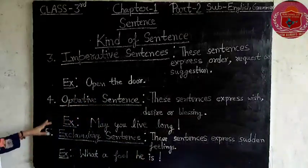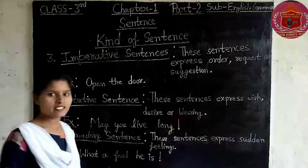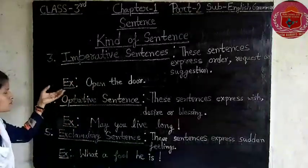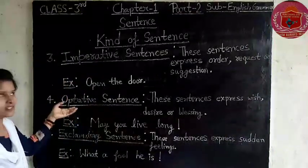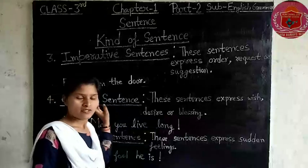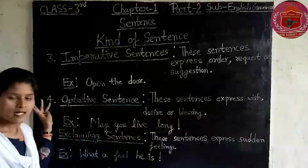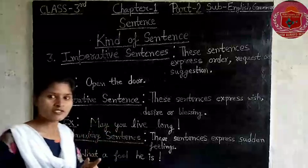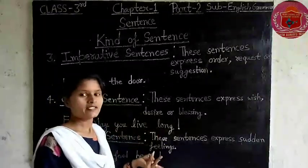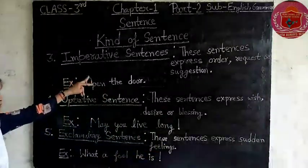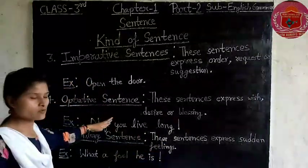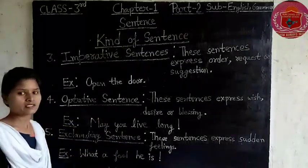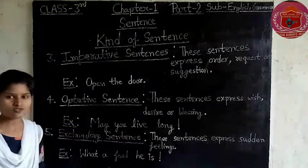So these are the five types of sentences which we discussed one by one: first is statement, second is interrogative, third is imperative, fourth is optative, and fifth is exclamatory sentence. Now we are done. Thank you.